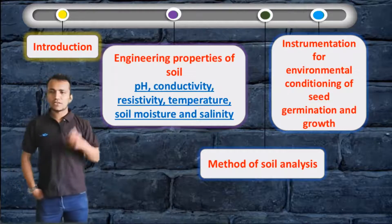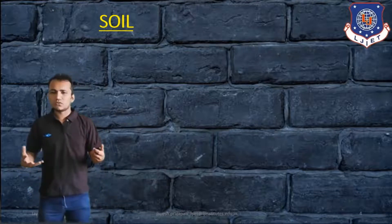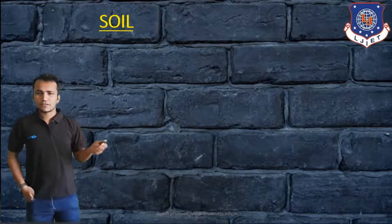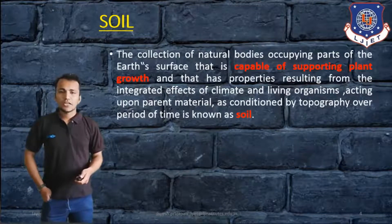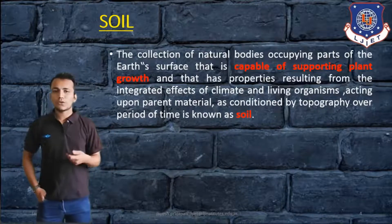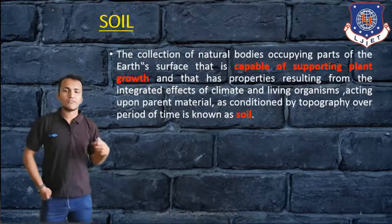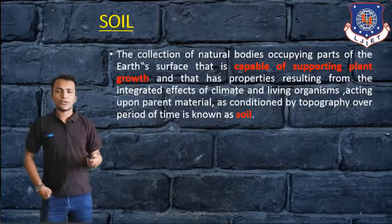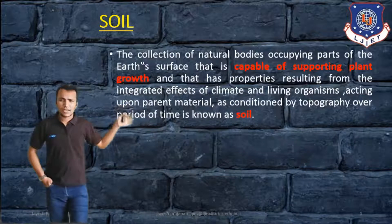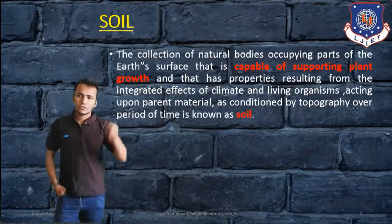First of all, as per the name of this chapter, we will identify what is soil. We already know that different kinds of soils are available. Soil is defined as the collection of natural bodies occurring as part of the earth's surface that is capable of supporting plant growth, and that has properties resulting from the integrated effect of climate and living organisms acting upon parent material as conditioned by topography over a period of time.